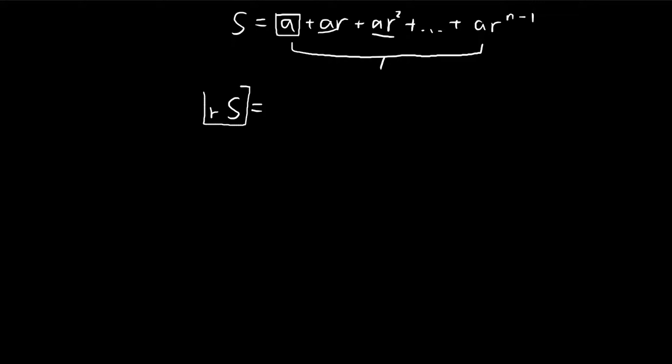Quite obviously, the left-hand side is equal to RS. The right-hand side is equal to AR plus AR squared all the way to AR^(n-1) plus AR^n. And then we're going to subtract this term from this term. On the left-hand side, we get S minus RS.